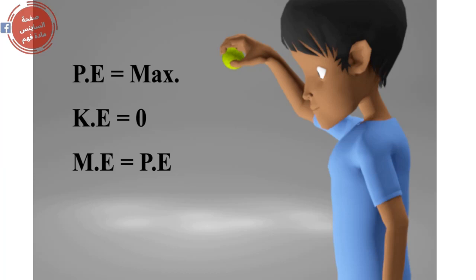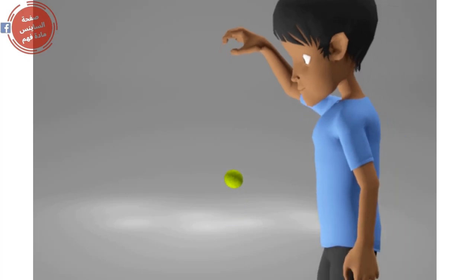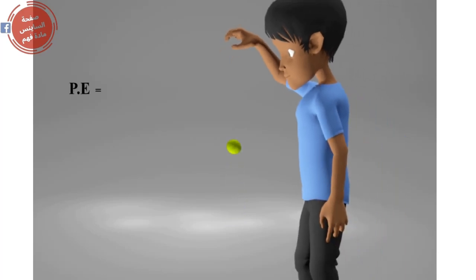Accordingly, in this state you will find that the mechanical energy equals the potential energy. However, when the ball is at its midpoint between your hand and the ground, you will find that the potential energy equals the kinetic energy, which equals half the mechanical energy.